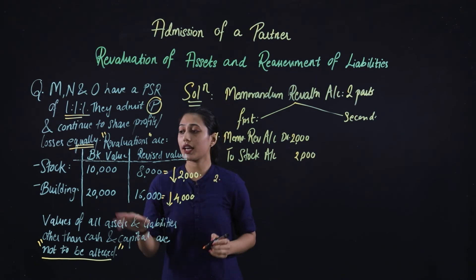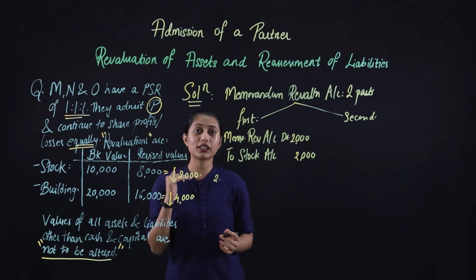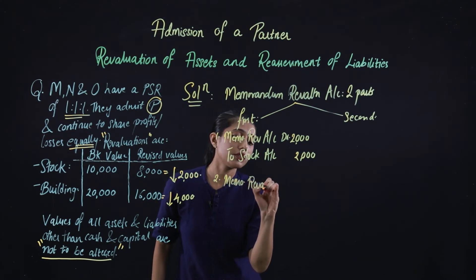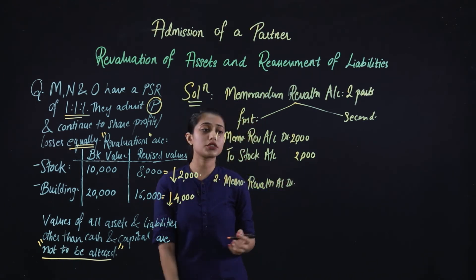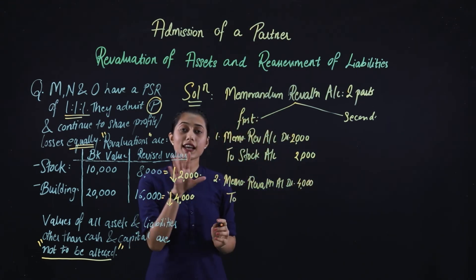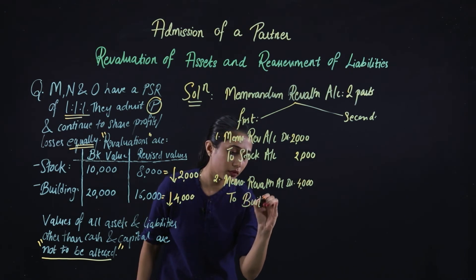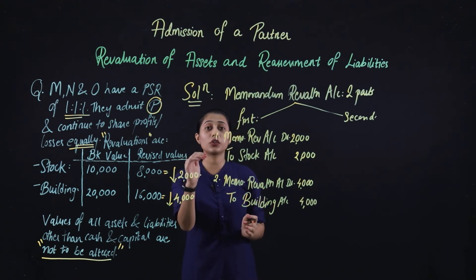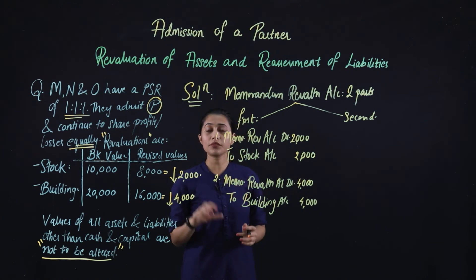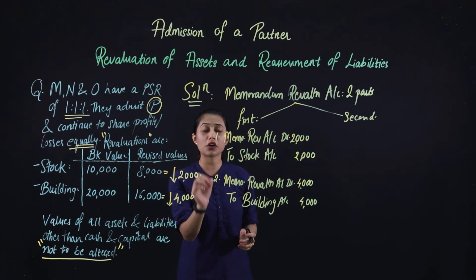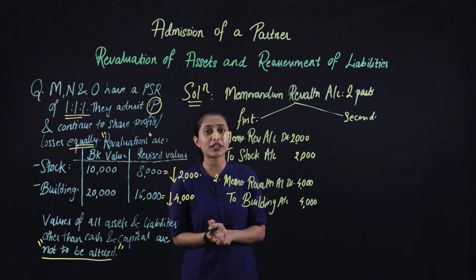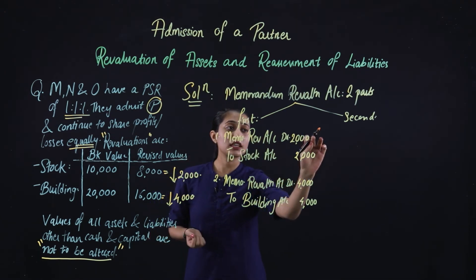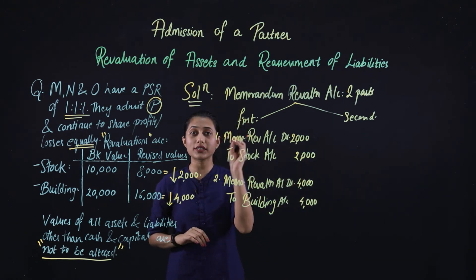The next revaluation is for building, which has also gone down by ₹4,000. Reduction in an asset means we debit the Memorandum Revaluation Account by ₹4,000 and credit the Building Account by ₹4,000. These are the only two reductions, so the total debit to the Memorandum Revaluation Account is ₹2,000 + ₹4,000 = ₹6,000, giving us a total revaluation loss of ₹6,000.